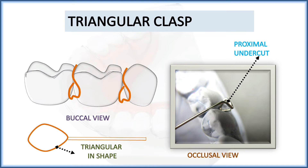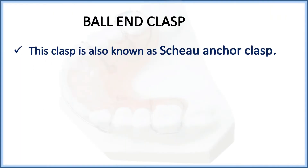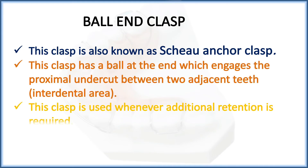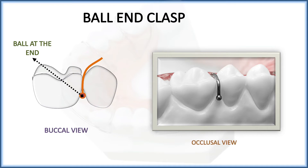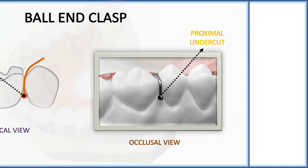The ball end clasp is also known as the shoe anchor clasp. It has a ball at one end which engages the proximal undercut between two adjacent teeth, meaning it engages the interdental area. It is used whenever additional retention is required, same as the triangular clasp. The buccal view shows the ball at one end, and the occlusal view shows how it engages the proximal undercut to provide additional retention.